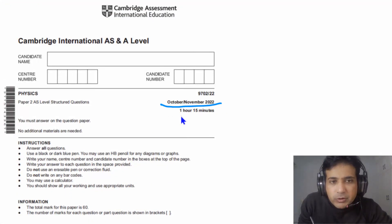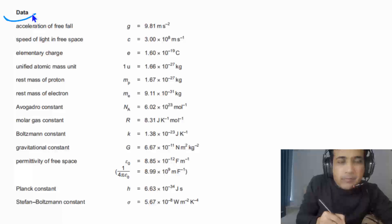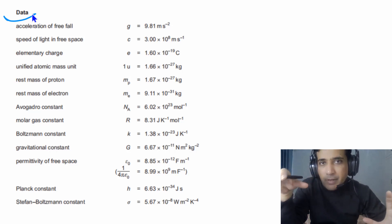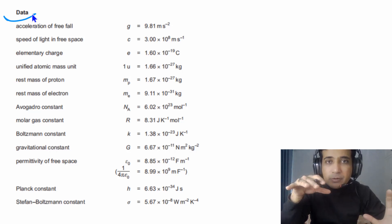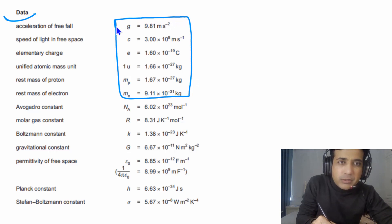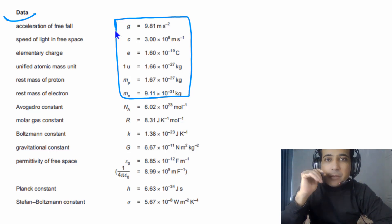In today's class, we are talking about October/November 2022, Paper 2, Variant 2. The total time for this exam is 1 hour and 15 minutes and the total mark is 60. You need to answer all the questions. On the second page of the exam paper, you can find values of some constants needed for calculations. It's important to remember these constants, but if you've forgotten any, you can find them on that page.